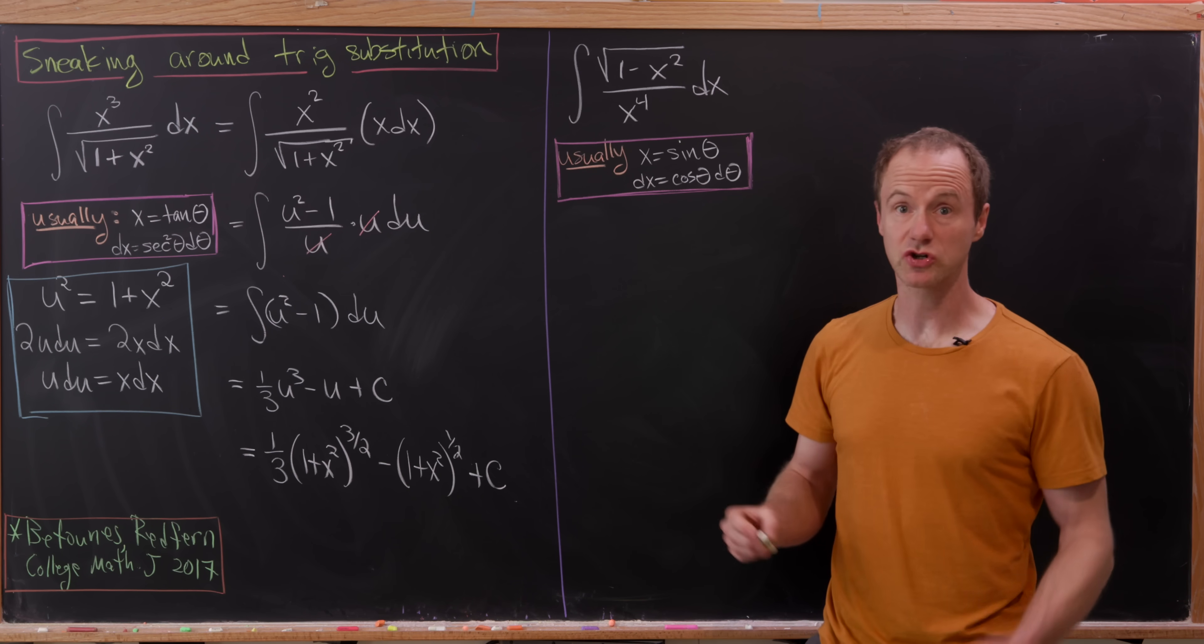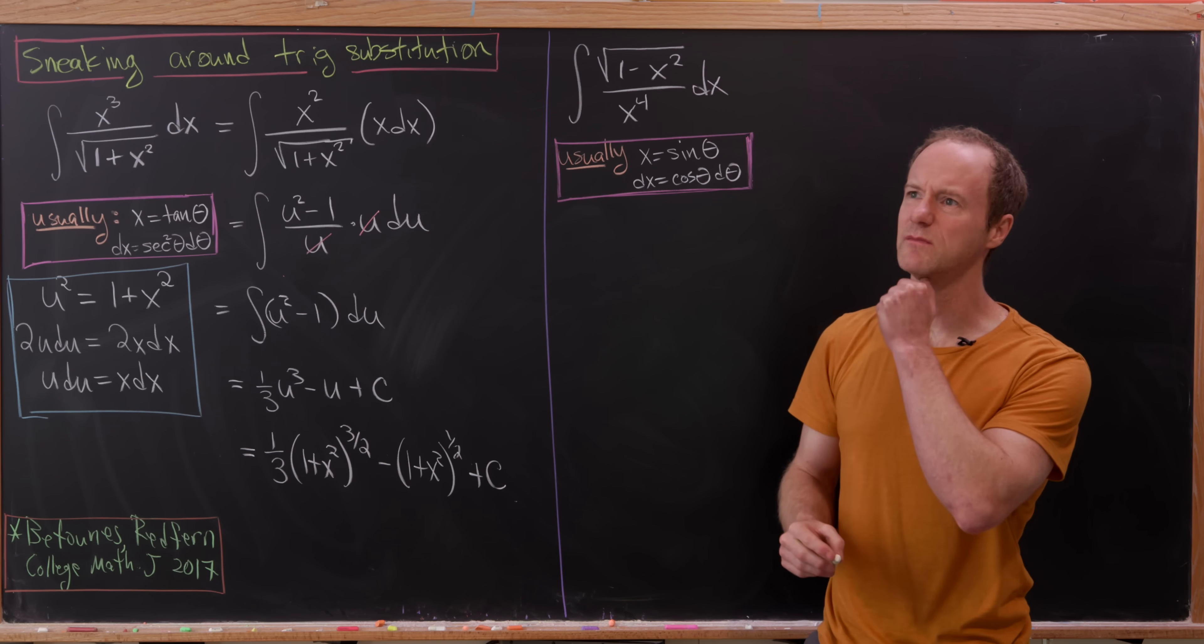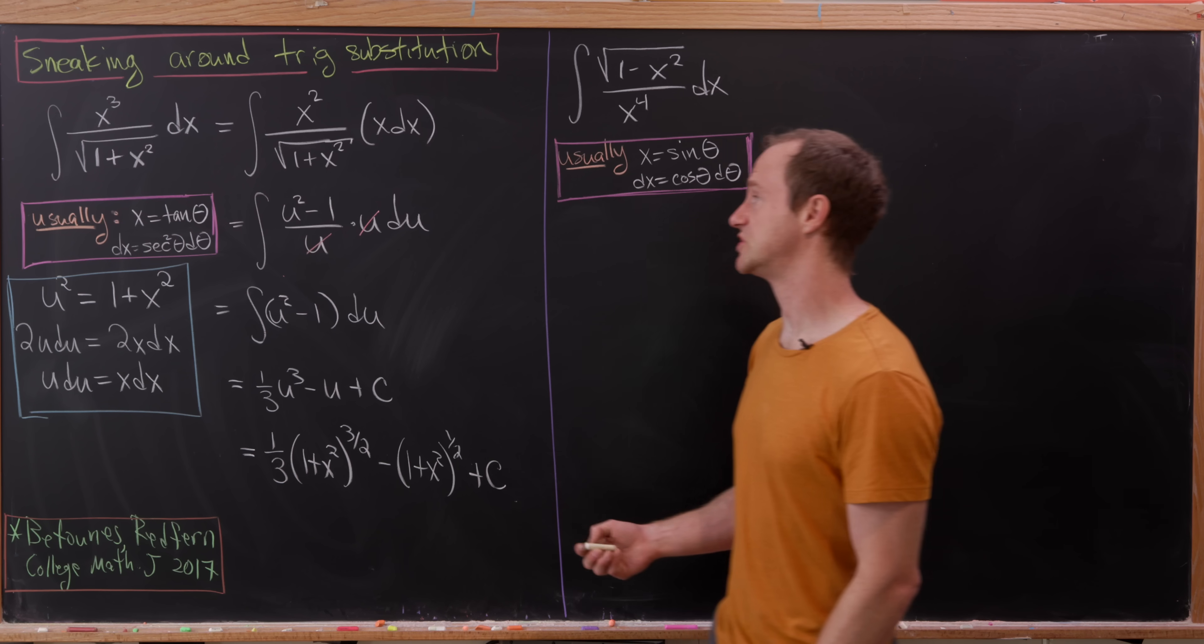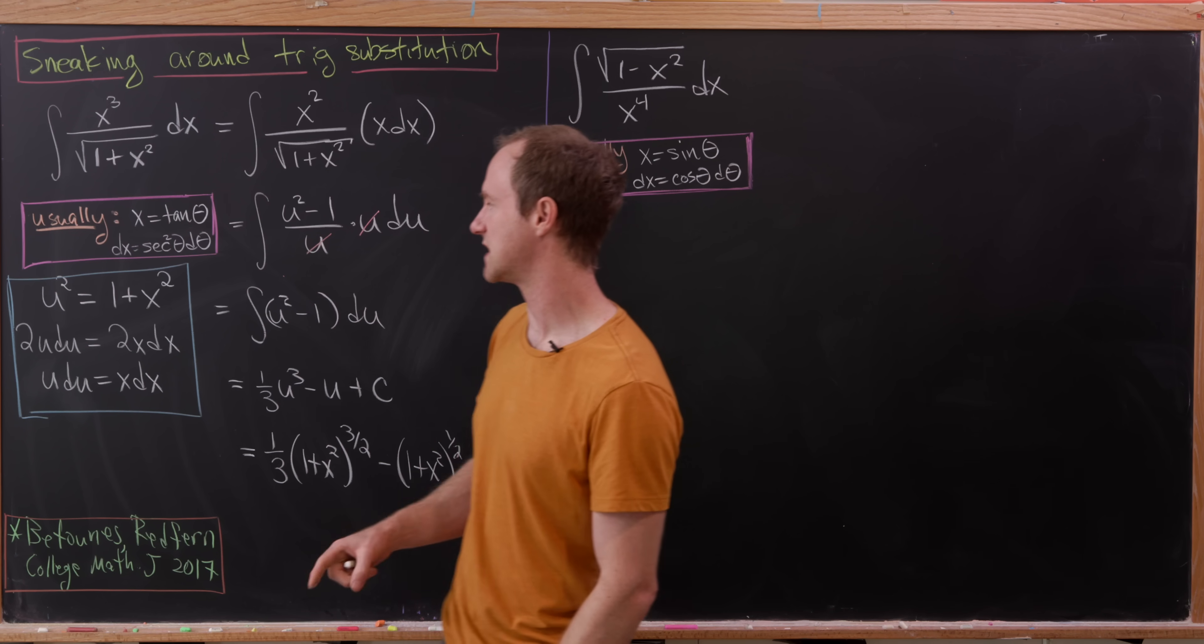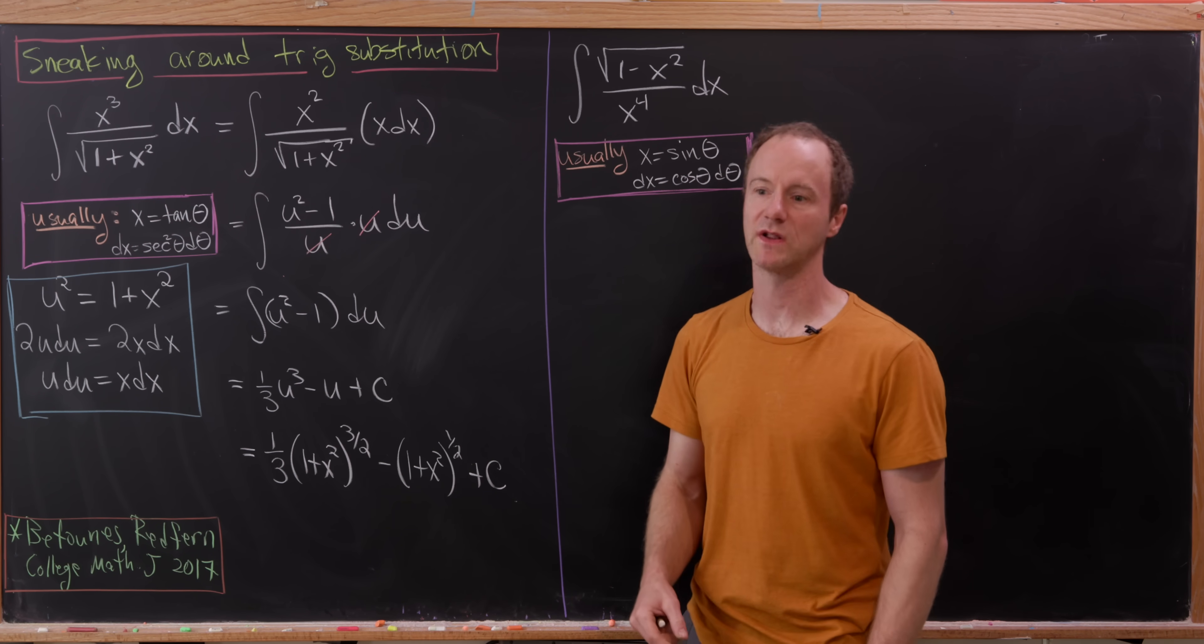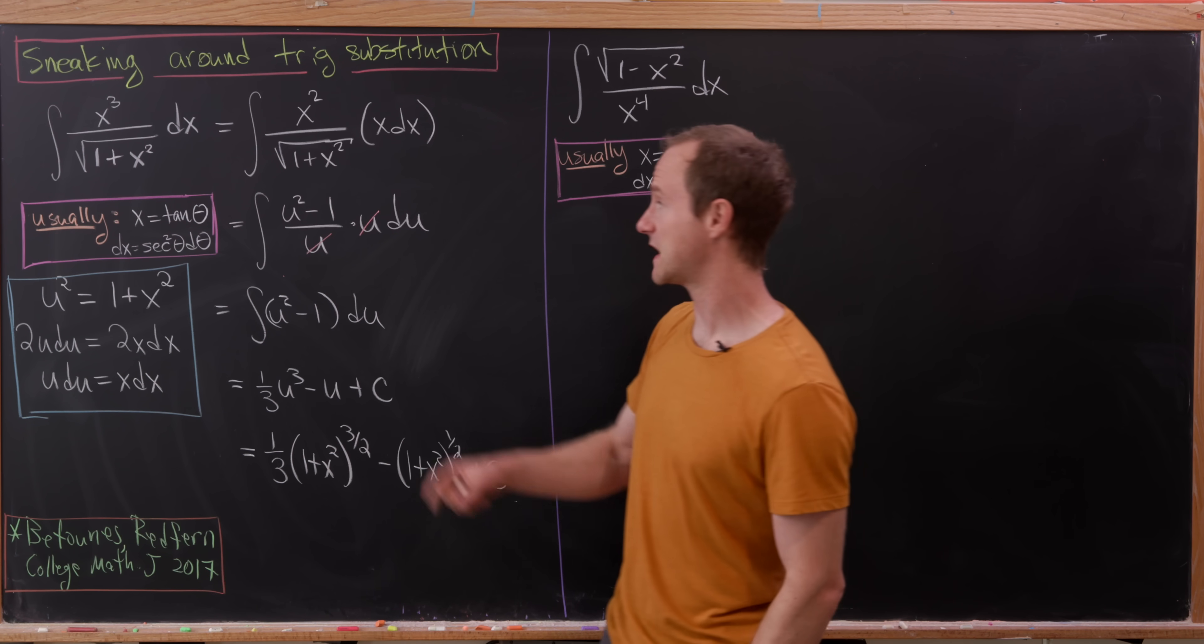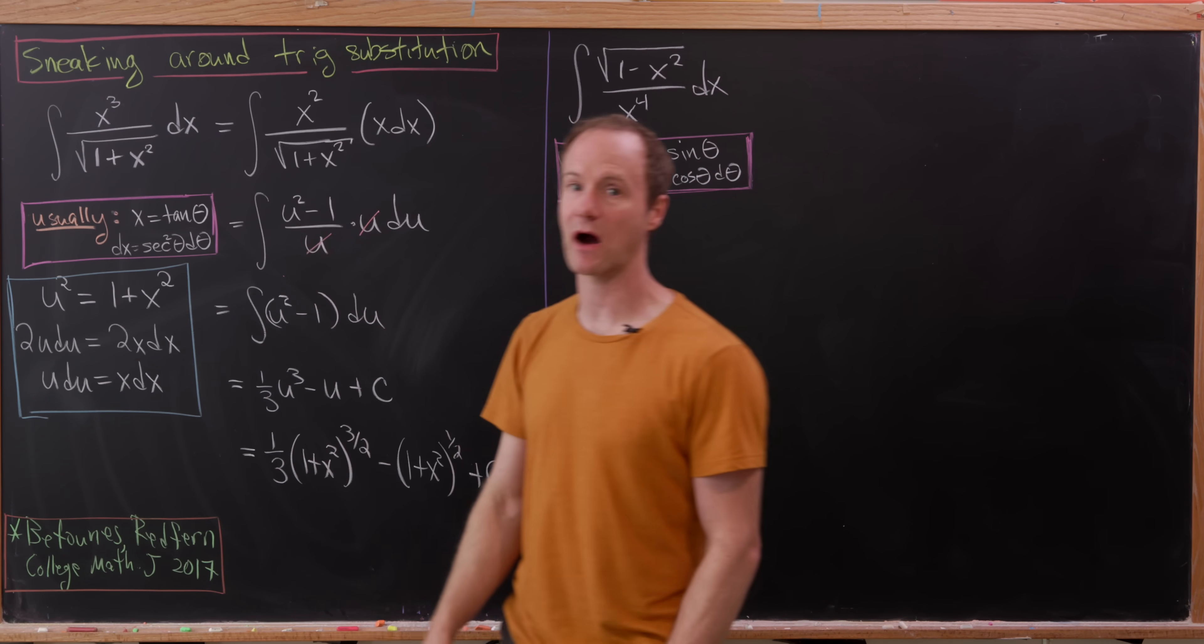So, like I said, there's no trig substitution here. But this substitution, you could maybe poke around with and come up with that without too much difficulty. Because, like I said before, observe that it's essentially the same thing as setting u equal to the square root of 1 plus x squared. That being said, we're really helped out with the fact that we have x to an odd power up here.